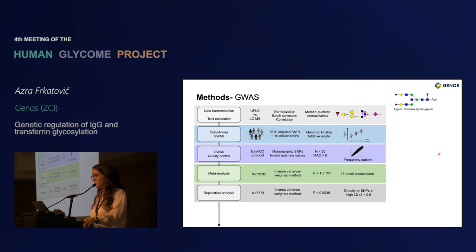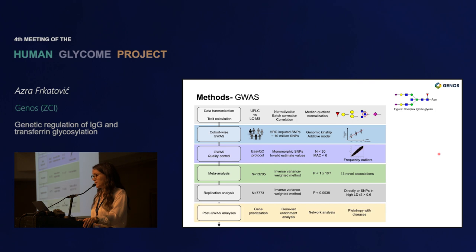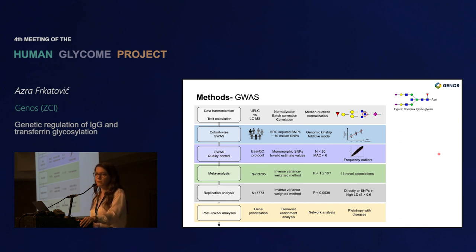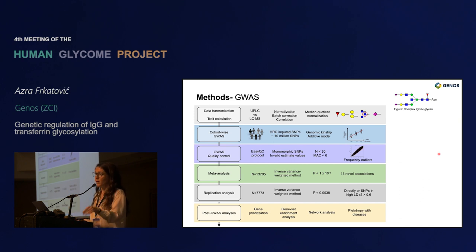We replicated our results in around 7,000 samples, replicating either the top SNPs in the regions or those in linkage disequilibrium with these SNPs. A majority of our effort was also put into post-GWAS analysis, doing gene prioritization, because the majority of variants we detect are found in non-coding regions. It can be really hard to connect a SNP with a certain gene, so there is a lot of effort put into understanding what gene a given SNP might be tagging in a region.